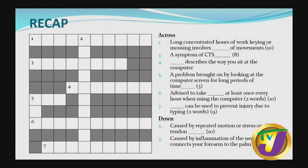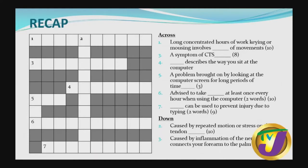Three across: a symptom of CTS — the answer is numbness. Excellent. Number four across: describes the way you sit at the computer — the answer is posture. We should ensure that our posture at the computer is very good so that it reduces the incidence of lower back pain and other computer health-related issues. Five across: a problem brought on by looking at the computer screen for long periods of time — that is CVS, computer vision syndrome.